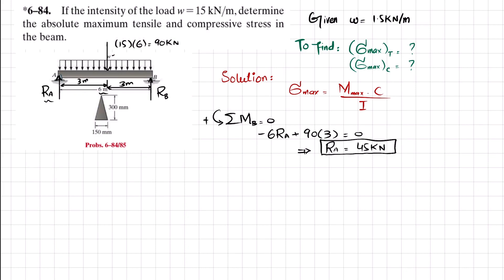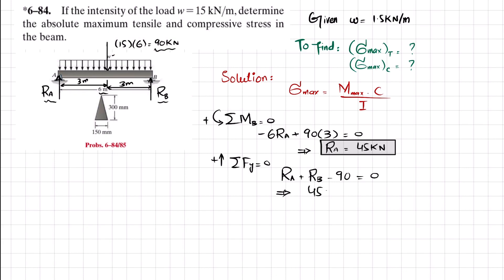Similarly, R_B is found using the second equilibrium condition: sum of all forces in the y-direction equals zero, taking upward as positive. So R_A + R_B − 90 = 0. Since R_A = 45, we get 45 + R_B − 90 = 0, therefore R_B = 45 kilonewtons.